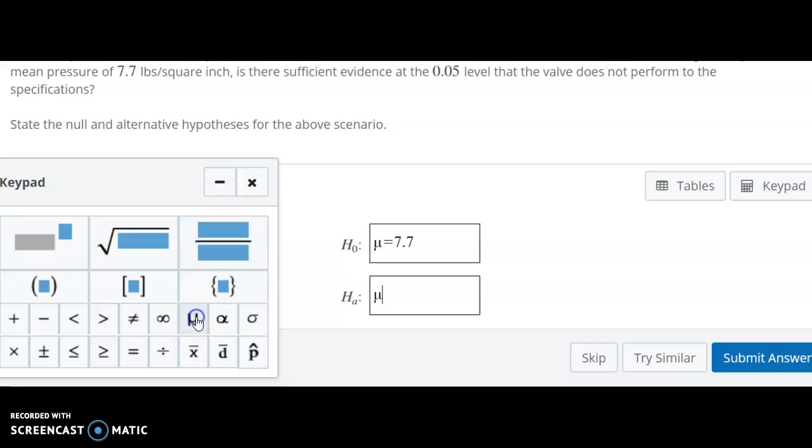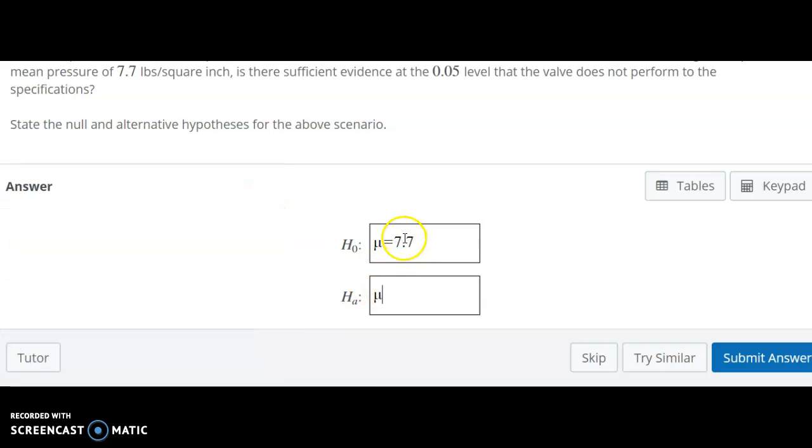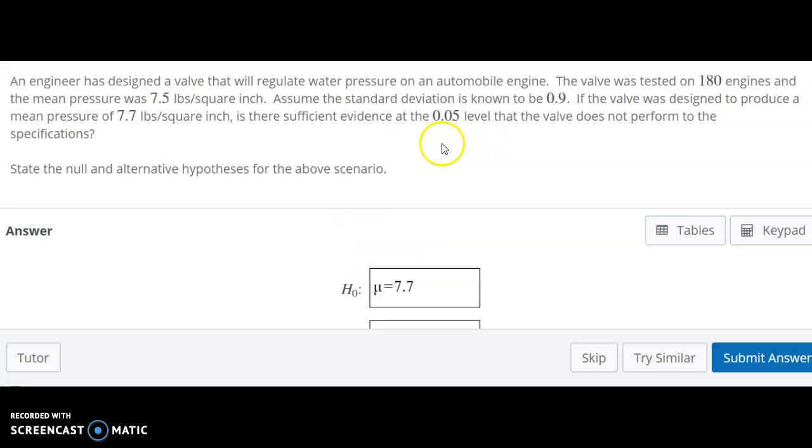The alternative then, again, has to use that mean. And it has to have the 7.7. What we need to figure out is what's the next symbol. I'm going to put 7.7 there also. We're just trying to figure out what symbol goes in here. Sufficient evidence that the valve does not perform to the specifications.